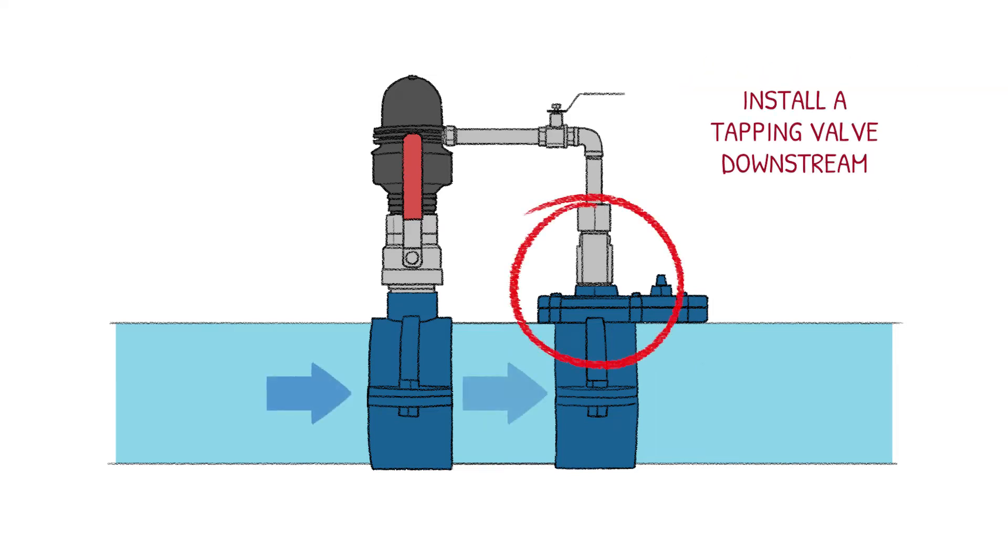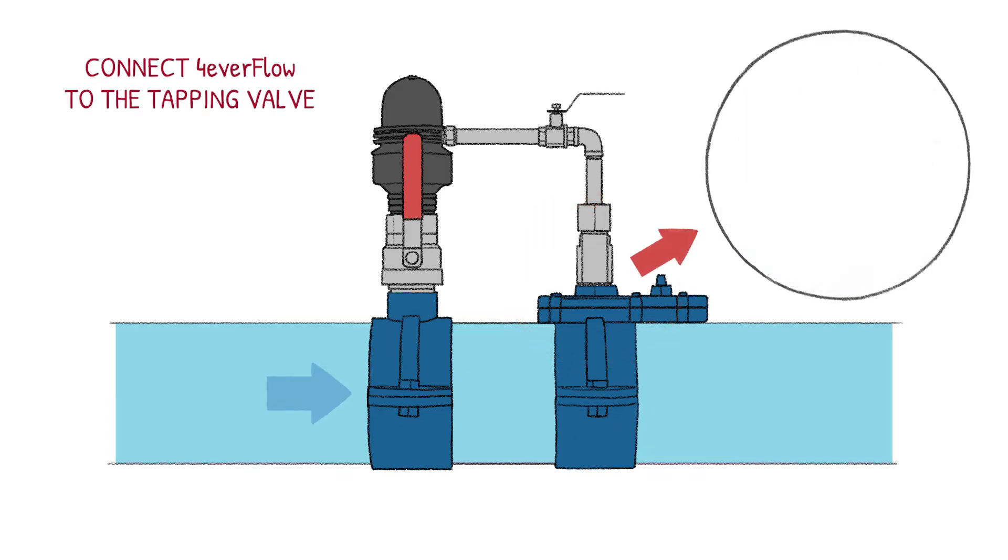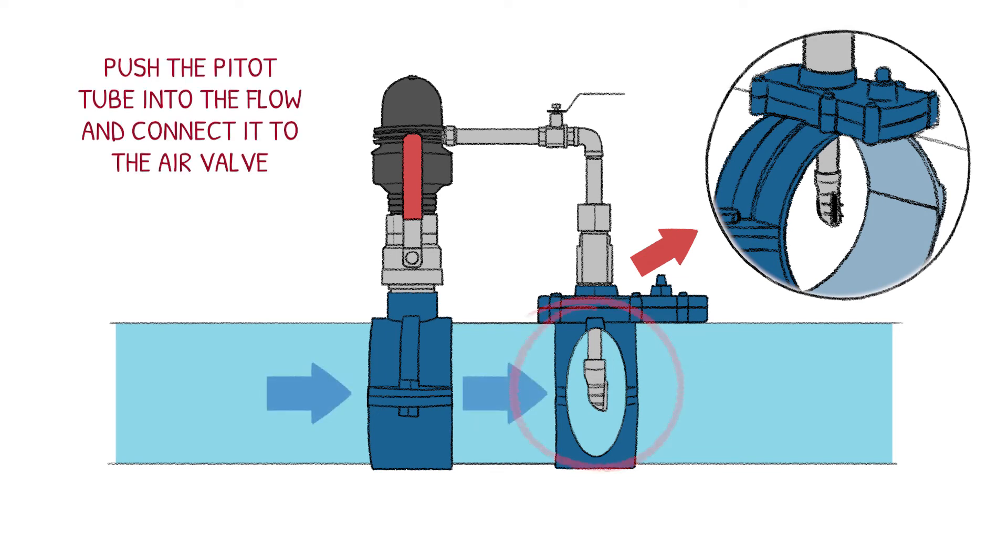Install a tapping valve downstream of the air valve. Connect Forever Flow to the tapping valve. Push the pitot tube into the flow and connect it to the air valve.